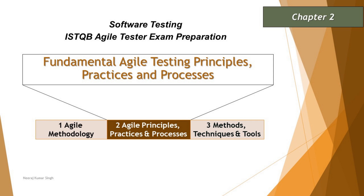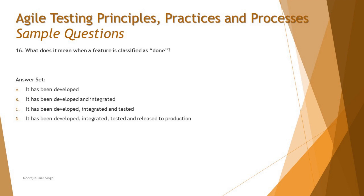The next question on our list is Question 16: what does it mean when a feature is classified as done? We are correlating the status and migration of different objects within the agile methodology. There are different statuses representing the ongoing practices and current state of any work item. We use different names like 'to do,' 'in progress,' and 'done.' Generally, 'done' means all the work has been completed.